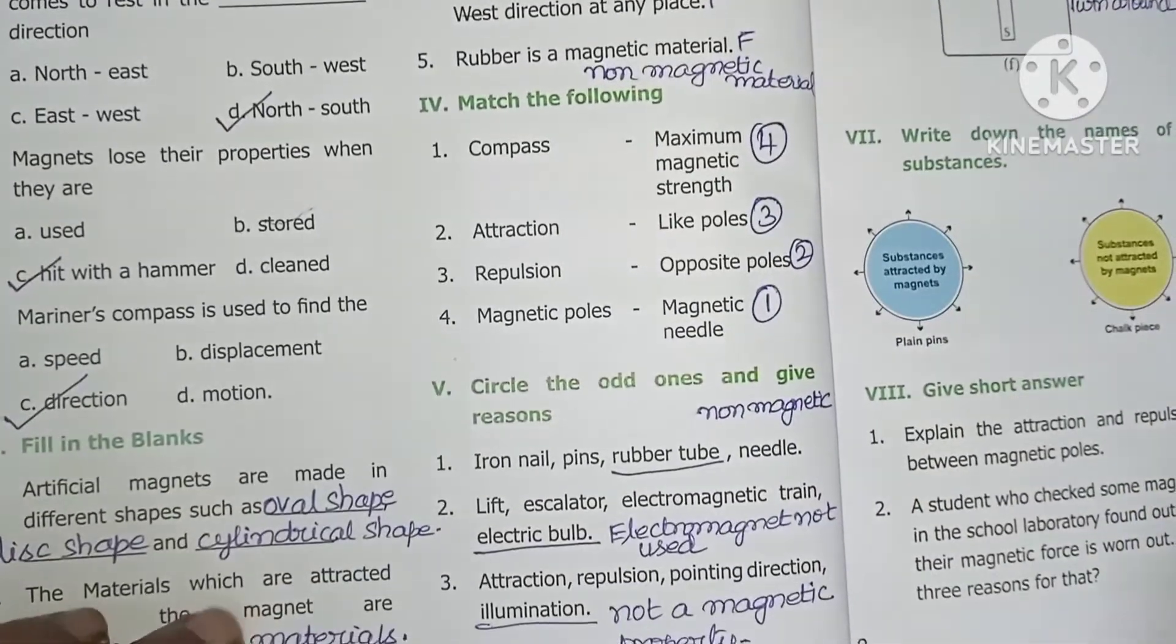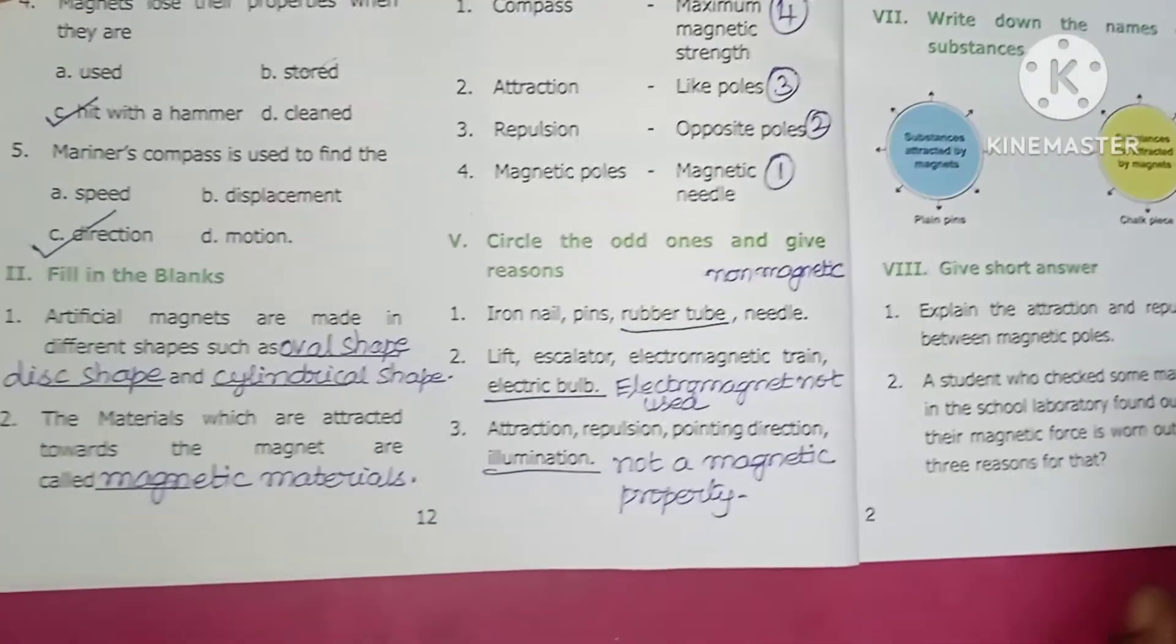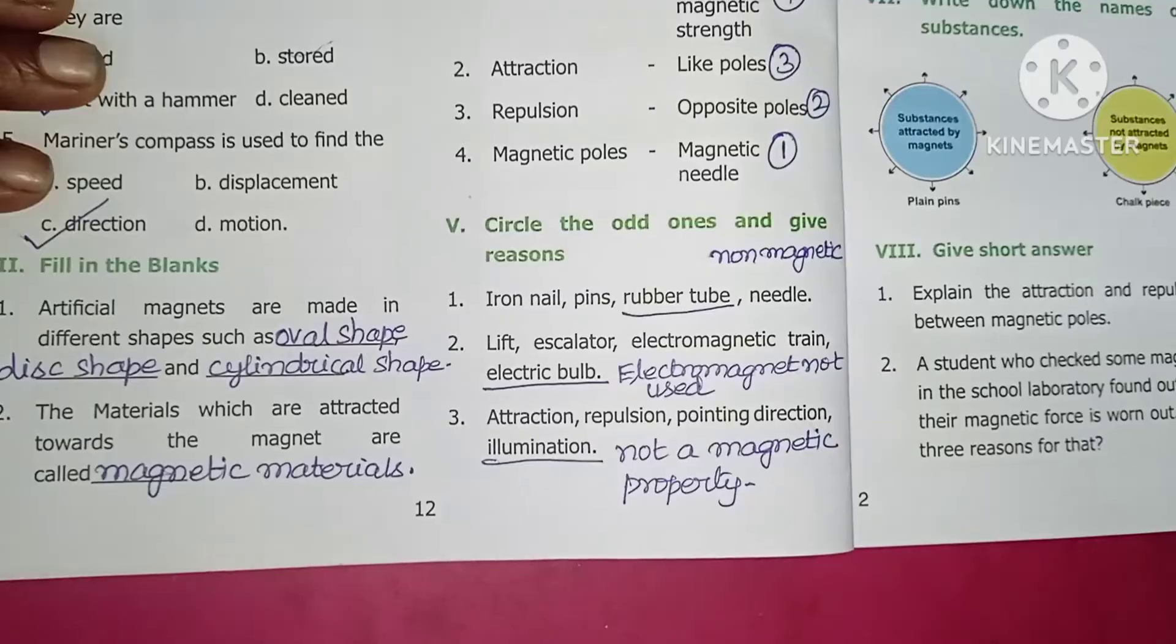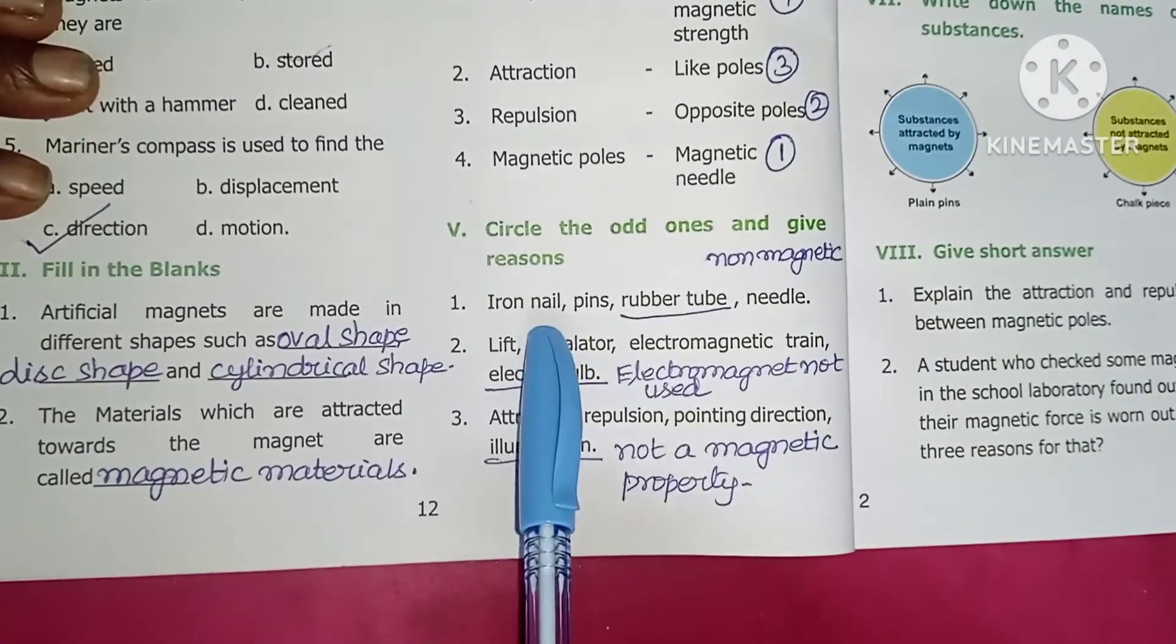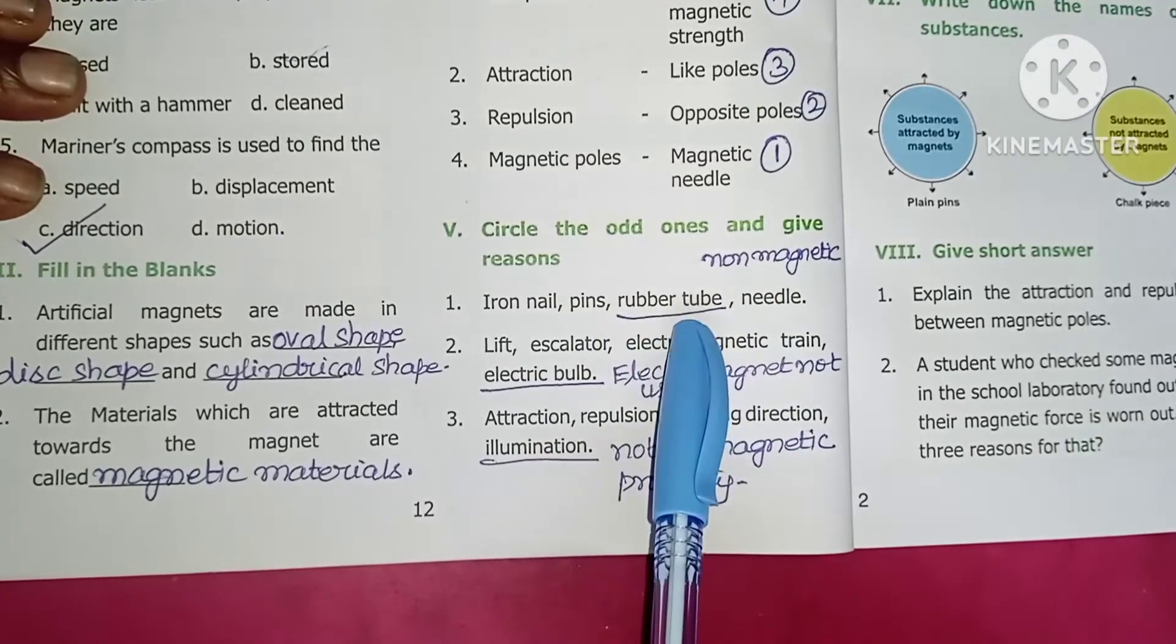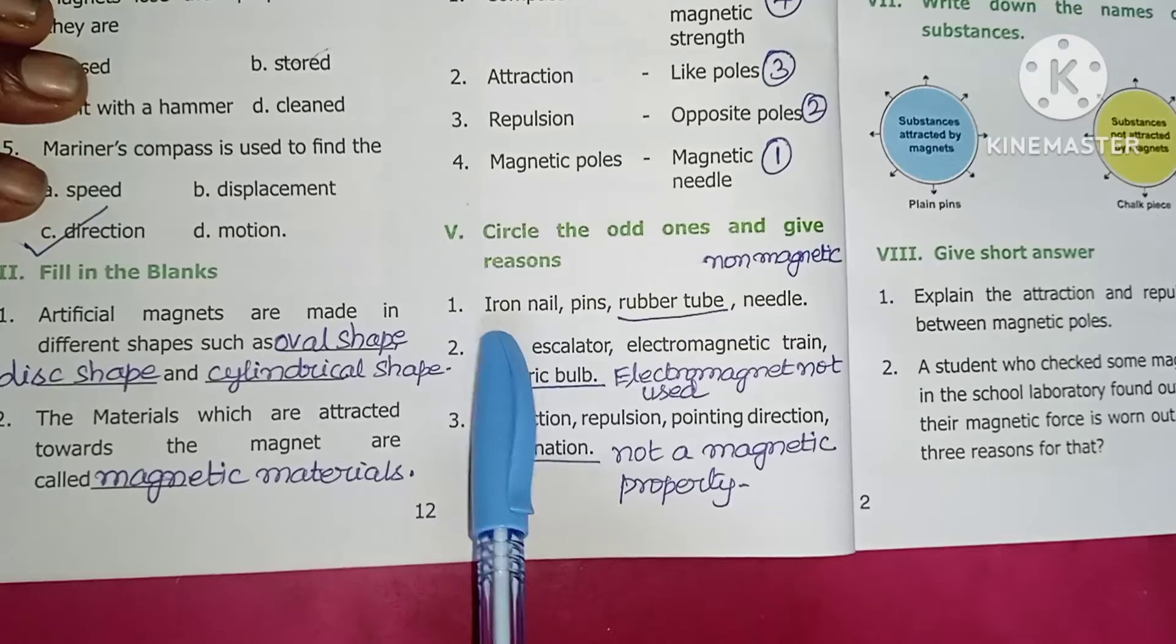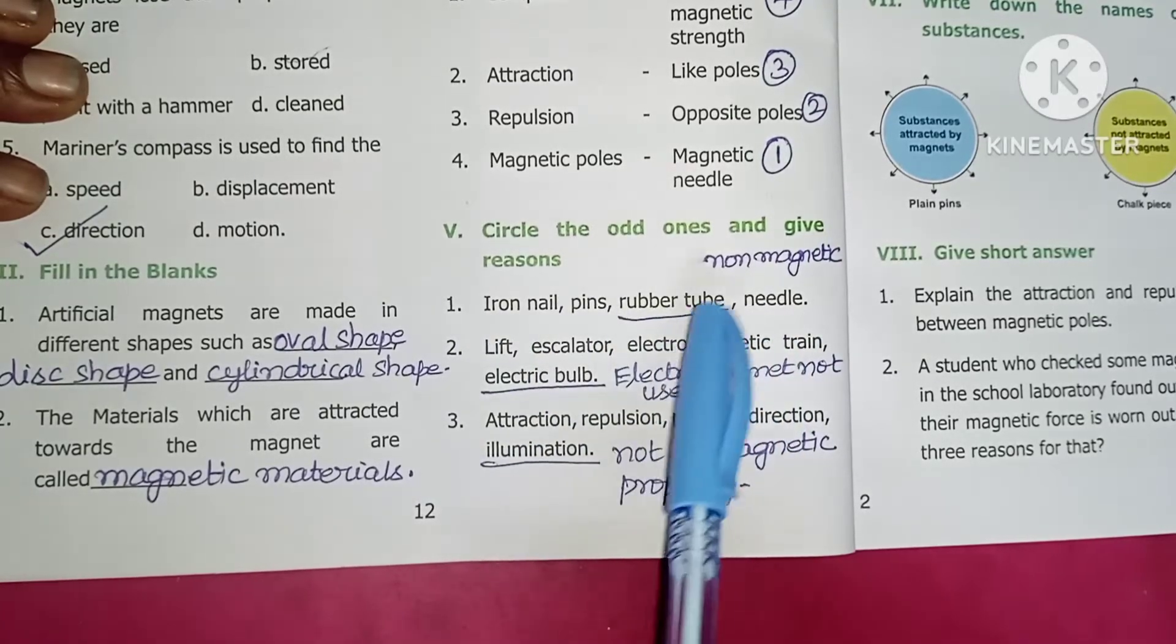Second, circle the odd one and give reasons. We have four words and will find which one is not related. Iron nail, pins, rubber tube, needle. Rubber tube is the odd one. Iron nail, pins, and needle are magnetic materials. Rubber tube is not magnetic, it is non-magnetic material.